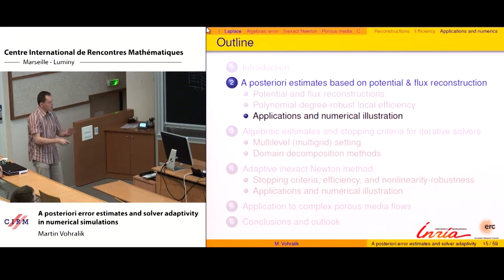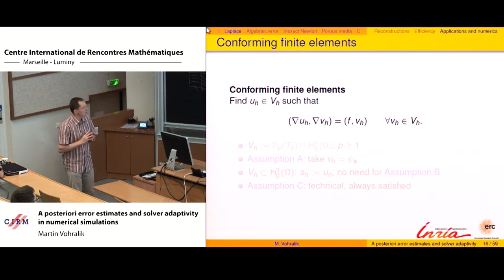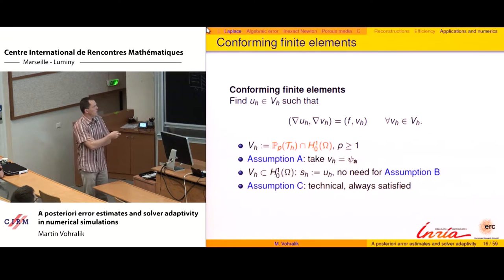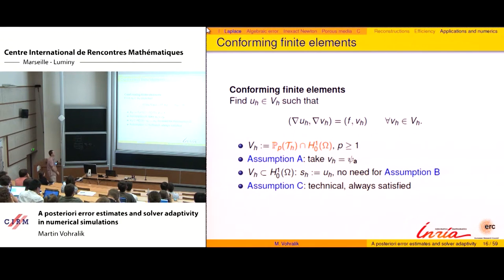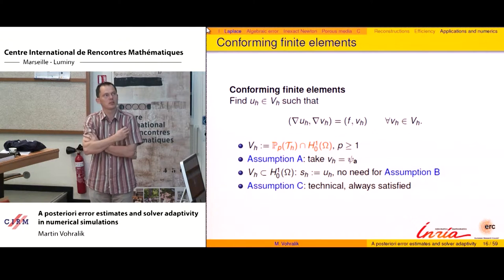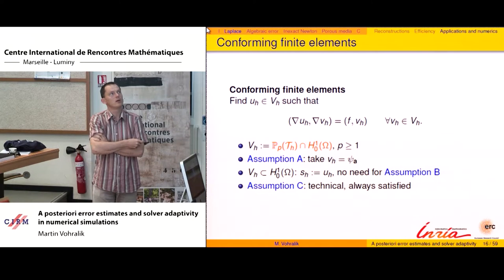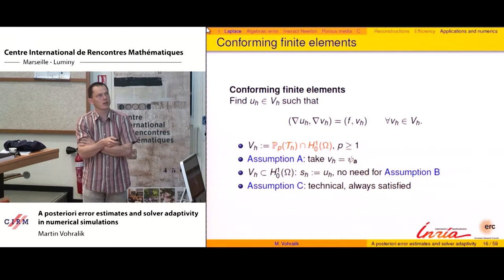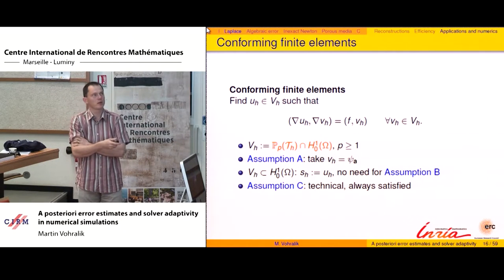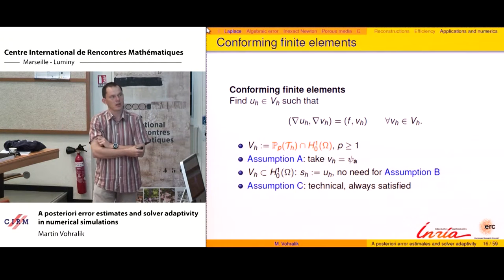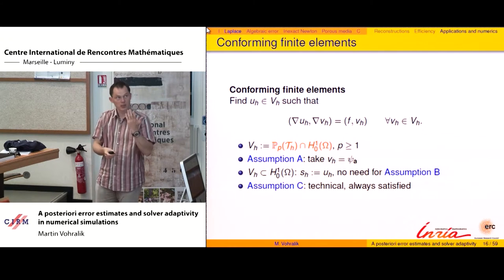Now let's see how this abstract theory applies in practice. Take conforming finite elements: a finite-dimensional subspace of H^1_0 with piecewise polynomials of degree P on each mesh element. It is immediate to check that the three required assumptions hold. Galerkin orthogonality is satisfied directly. Since the method is conforming, we can set s_h = u_h, and assumption C is always satisfiable. This is one example of a method fitting perfectly in the framework.